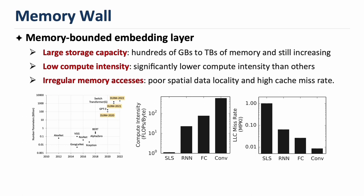The memory-bounded embedding layer imposes the following challenges to efficient execution. Firstly, the embedding tables take large storage capacity, up to hundreds of gigabytes to terabytes. Besides, the embedding operation exhibits low compute density compared to typical DNN models. In addition, the embedding table lookups exhibit irregular memory access, resulting in poor spatial data locality and a high cache miss rate.